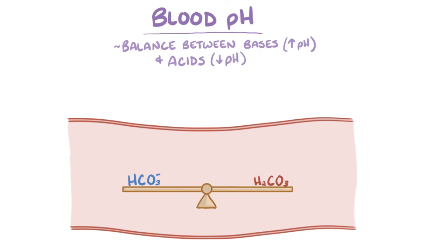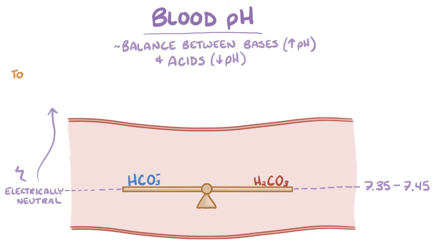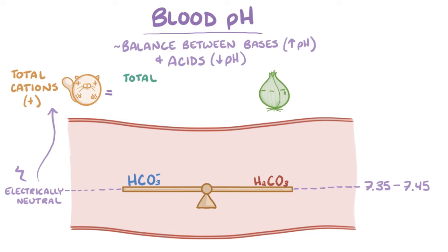The blood pH needs to be constantly between 7.35 and 7.45. Additionally, the blood needs to remain electrically neutral, which means that the total cations, or positively charged particles, equals the total anions, or negatively charged particles.